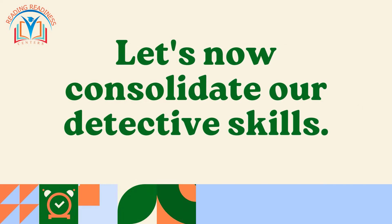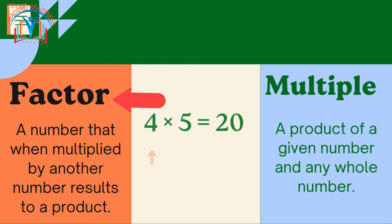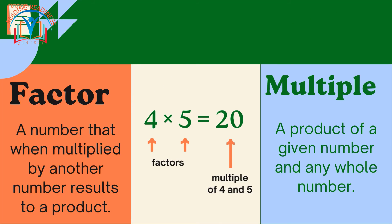Let's now consolidate our detective skills. A factor is a number that when multiplied by another number results to a product. Conversely, a multiple is the product of a given number and any whole number.